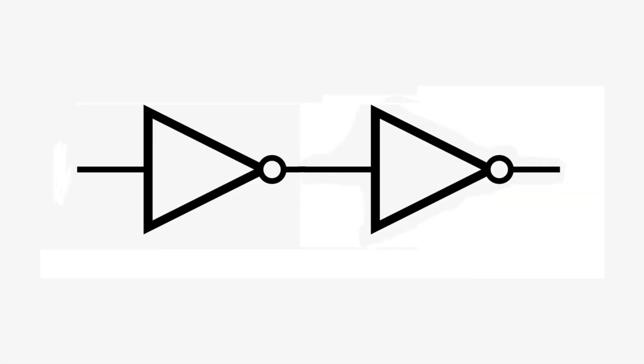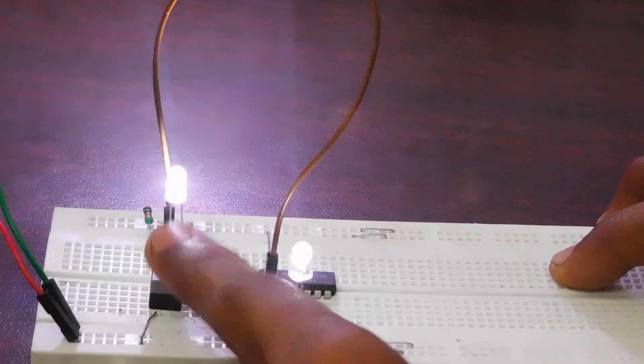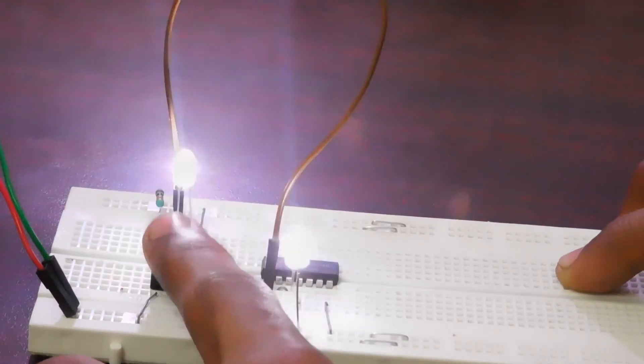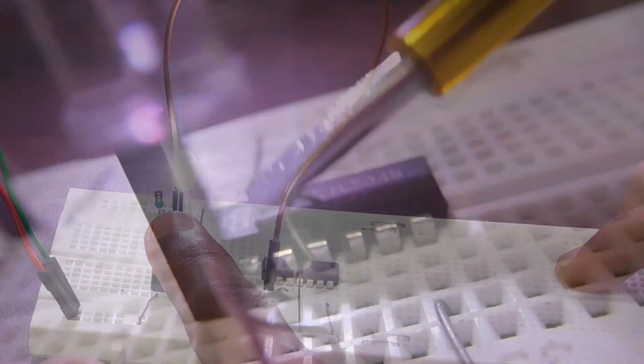The output of the first gate is 0 when its input is 1. As its output is connected to another gate, the second gate's output is 1 as its input is 0. So now, both LEDs either light up or they will not light up according to the state of the switch.